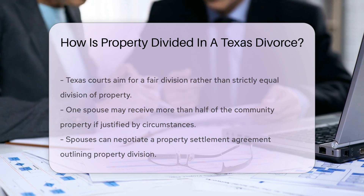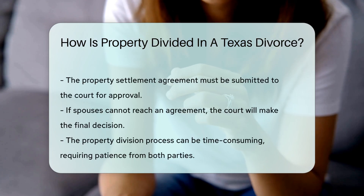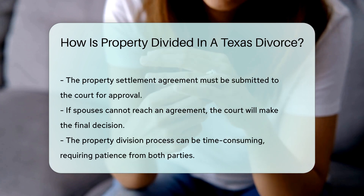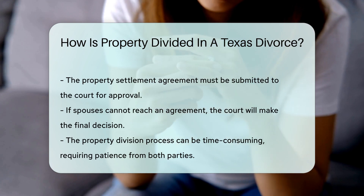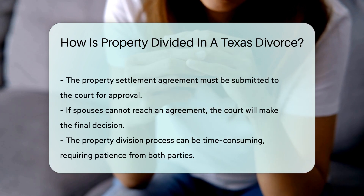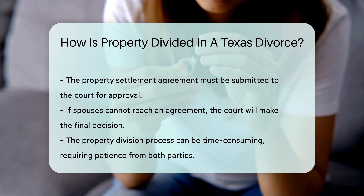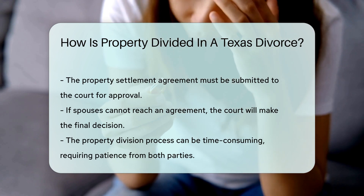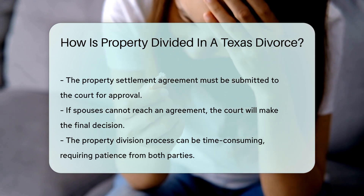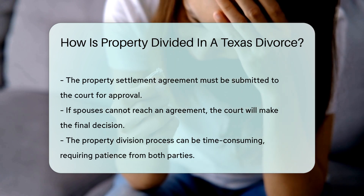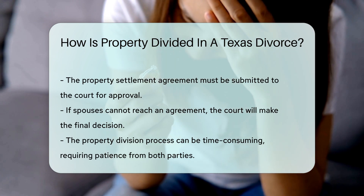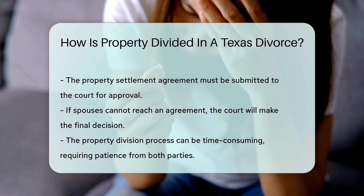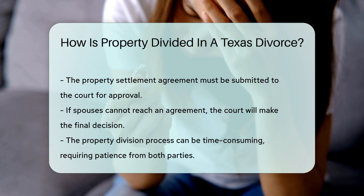Spouses can negotiate a property settlement agreement, which outlines how property will be divided and must be submitted to the court for approval. If spouses cannot agree, the court will make the final decision. This process can take time, so patience is essential.